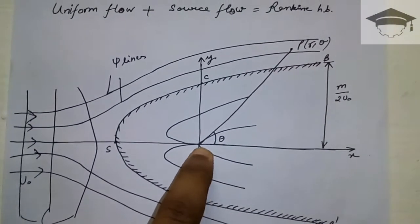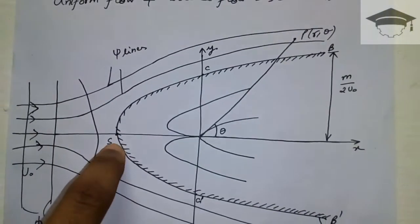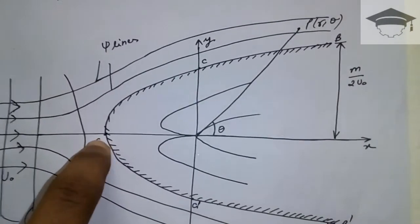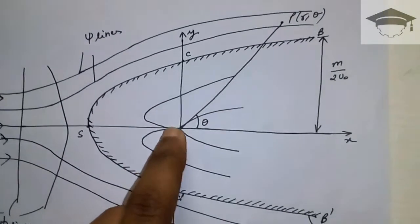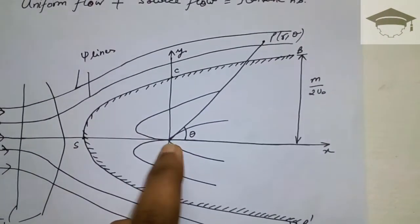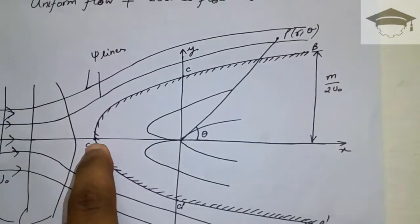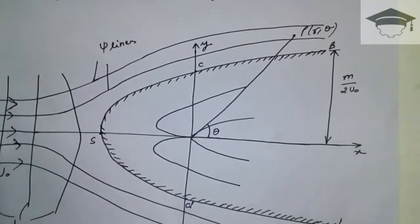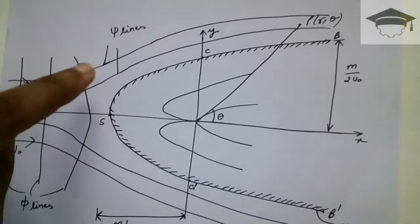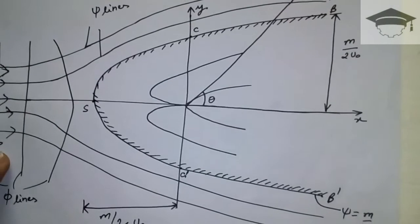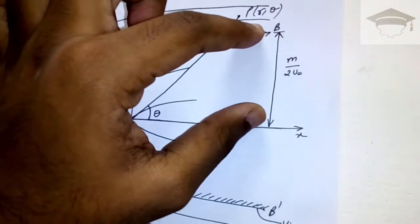The characteristics of Rankine Half Body: there is a stagnation point S at which the combined resultant velocity is zero. The flow starting from the source cannot penetrate beyond this point. The equipotential lines (φ lines) and stream lines (ξ lines) are always orthogonal or perpendicular. The free stream velocity is u₀, and I will prove that this distance is m/(2u₀) and this distance is m/(2πu₀), where m is the strength of the source.